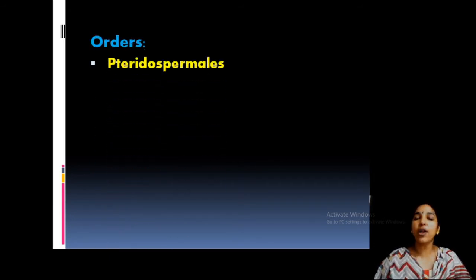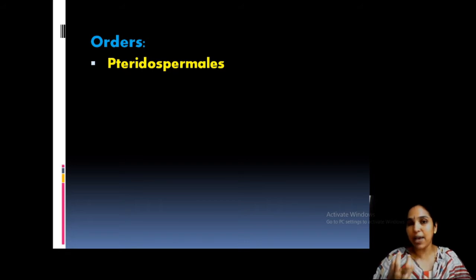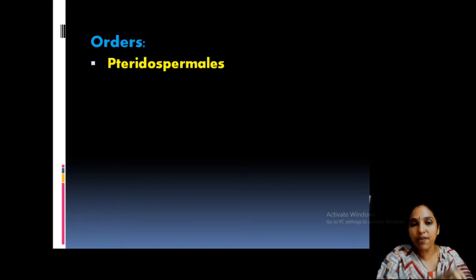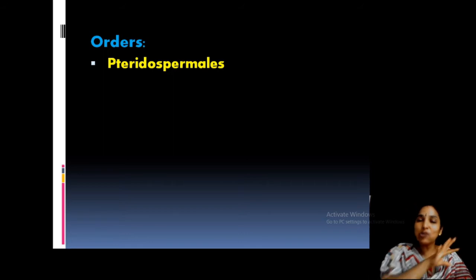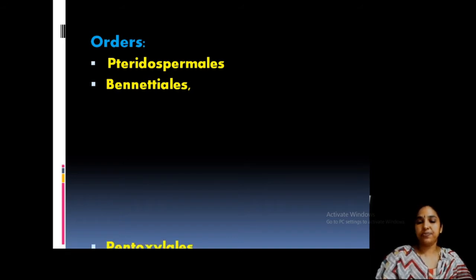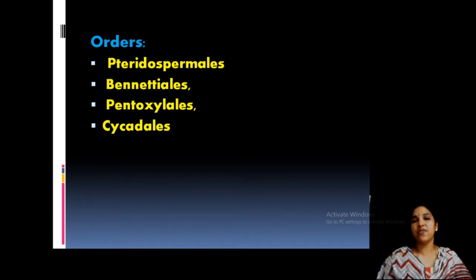The four orders of Cycadopsida are: Pteridospermales, Bennettitales, Pentoxylales, and Cycadales. Looking at the name Pteridospermales — 'pterido' refers to Pteridophyta and 'spermales' refers to seed-bearing plants — so they are actually a bridge between pteridophytes and gymnosperms, showing characters of both groups.